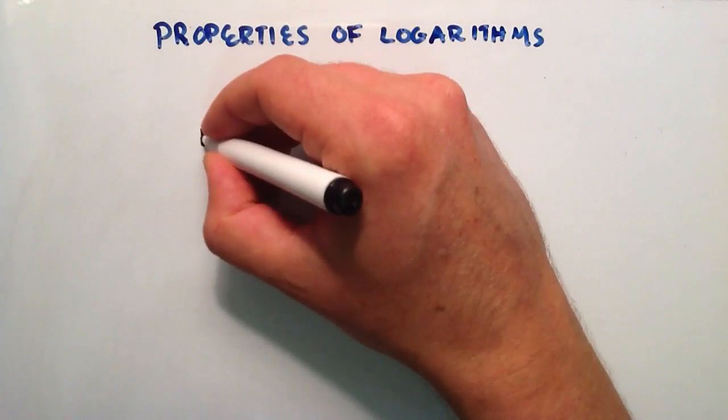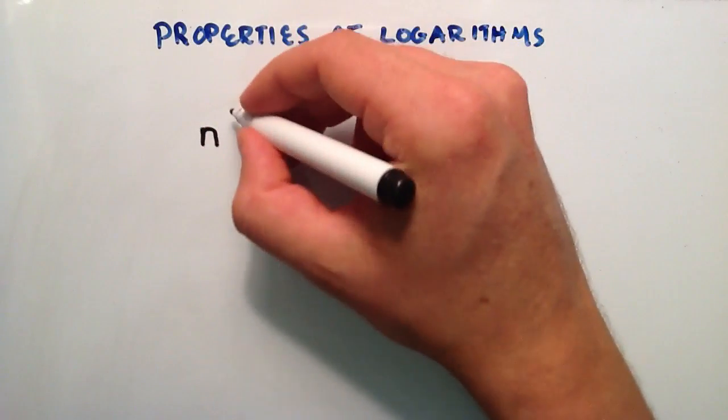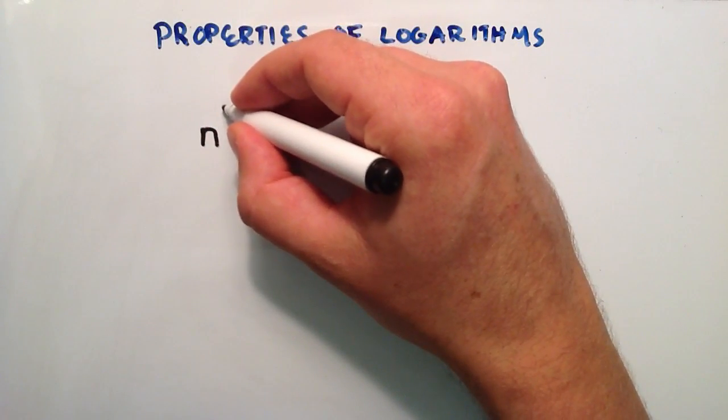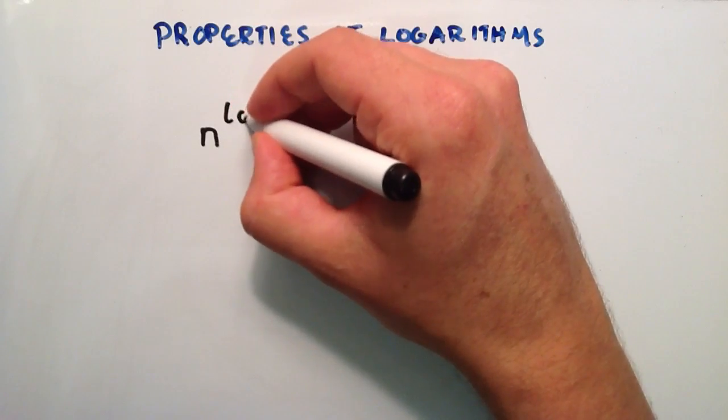So that property looks like this. We have some number n, and we're going to raise that n to a power, and the power is going to be a logarithm.